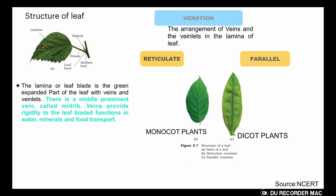The pattern of these lines — veins and veinlets — in the leaf is called venation. The arrangement of veins and veinlets in the lamina of the leaf is called venation. Venation is of two types: reticulate and parallel.